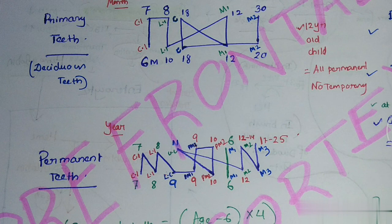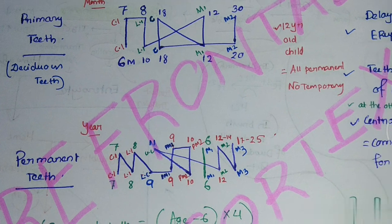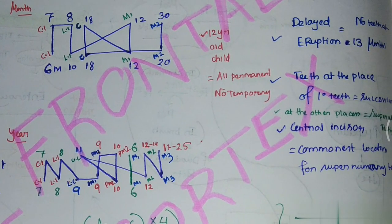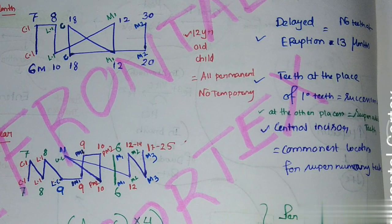Permanent teeth include two central incisors, two lateral incisors, two canines, four premolars, and six molars on one side — a total of 32 teeth.